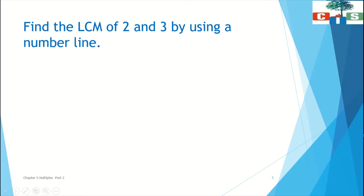Now we will see about number lines — that means we will find multiples and LCM using a number line. I hope you all know what a number line is. A number line is a line made up of numbers, and on it we have to locate multiples. Here we have an example: find the LCM of 2 and 3 using a number line.